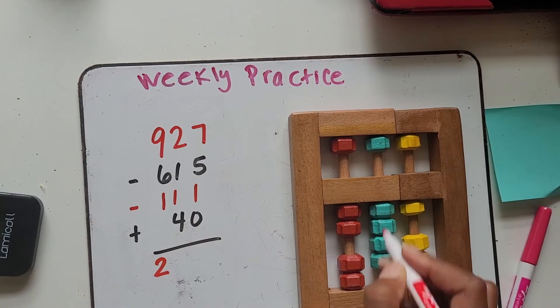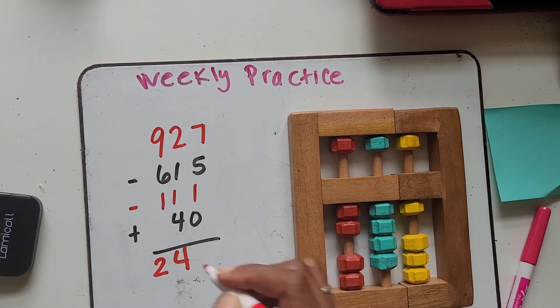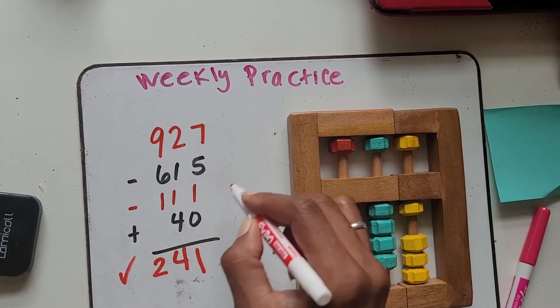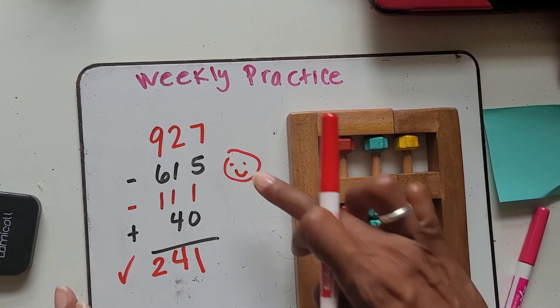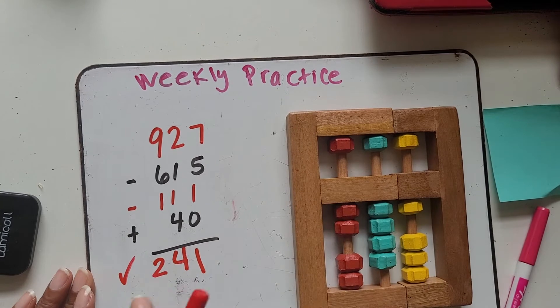Did you get two hundredths, four tens, and one? If you did, check. Good job. Pat yourself on the back. If not, that's okay. Just go back and see what step you skipped.